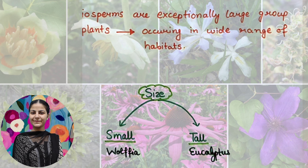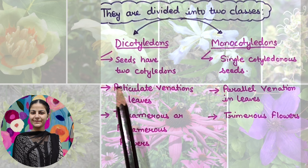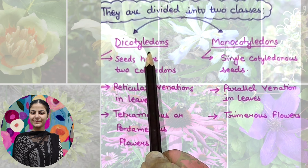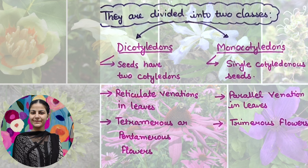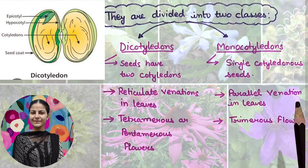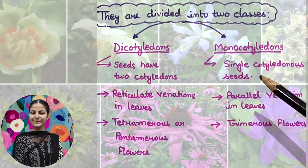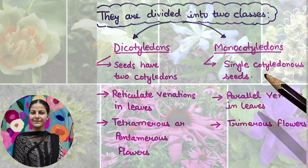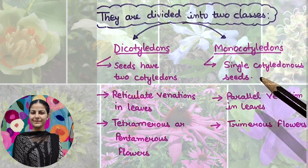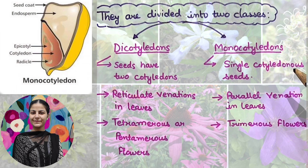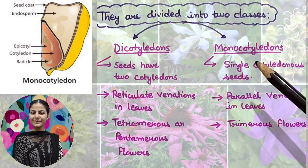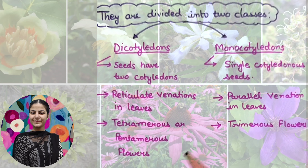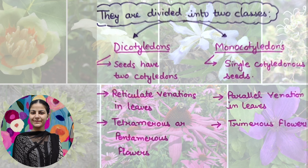We will divide angiosperms into two classes: Dicotyledonous and Monocotyledonous. Dicotyledonous plants have two cotyledons in their seeds, while Monocotyledonous plants have a single cotyledon in their seeds.